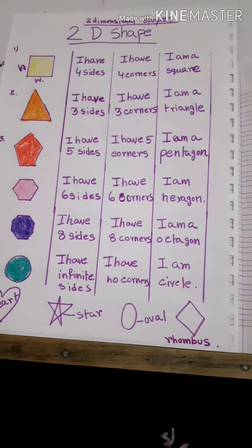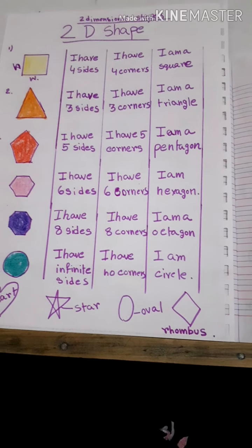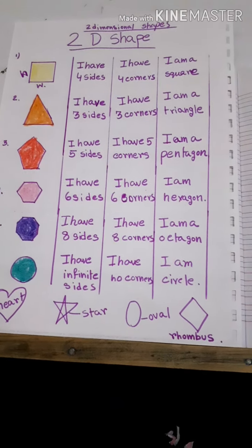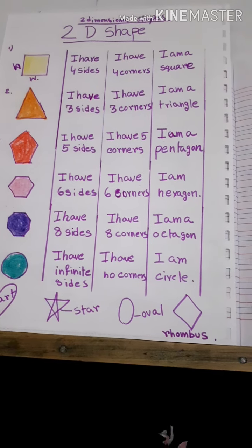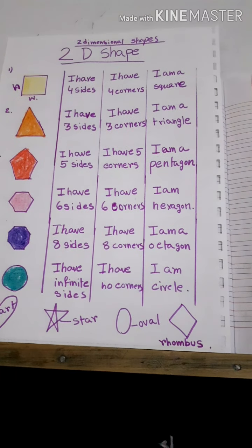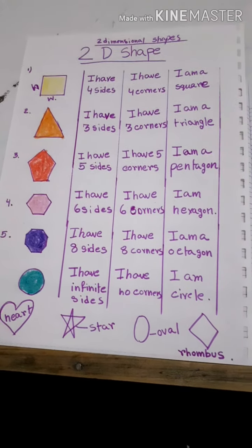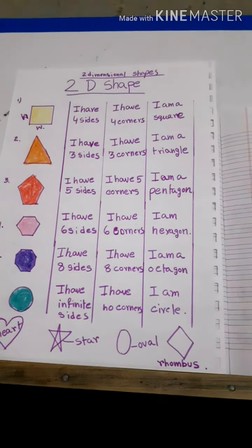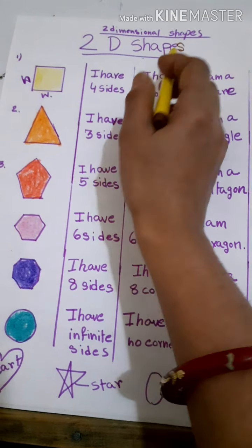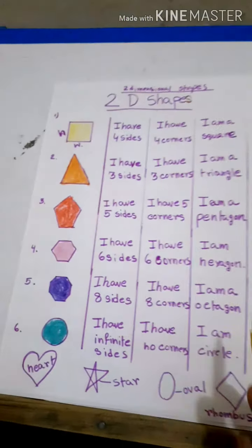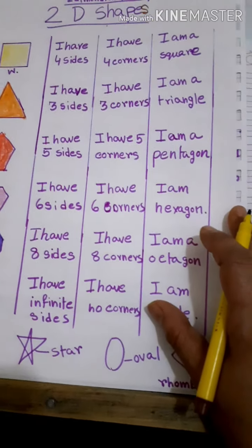Hello everyone, how are you viewers? How are you kids? Are you fine? I am fine. Hope you all are good and well at your home. Today I will discuss one interesting topic — the topic is shapes. There are many various shapes in our surroundings. Some shapes are called 2D shapes, that means two-dimensional shapes, and another is 3D shapes, that is three-dimensional shapes.